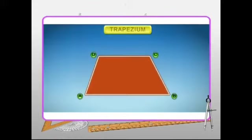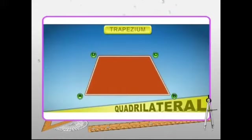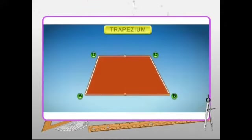A few common types of quadrilaterals are the trapezium, the parallelogram, the rectangle, the rhombus, square, and the kite. A trapezium is a quadrilateral with a pair of opposite sides parallel.